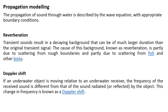Reverberation: Transient sound results in a decaying background that can be of much larger variation than the original transient signal. The transient signal always produces a decaying character with respect to underwater communication. The cause of this decaying background is known as reverberation. It is partially due to scattering from rock boundaries and partially due to scattering from fish and other living and non-living organisms within the underwater environment.